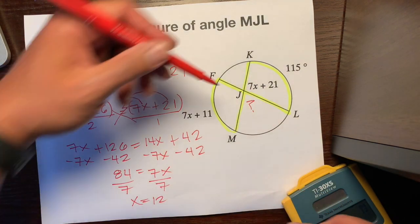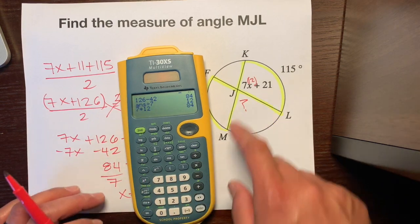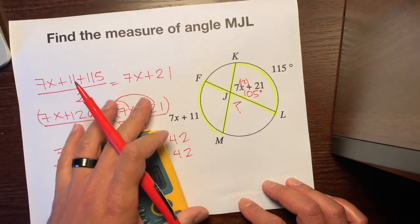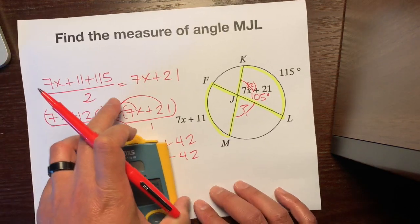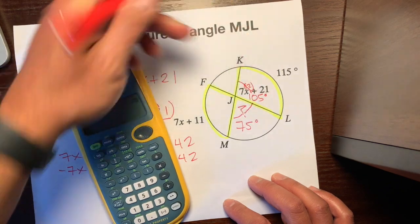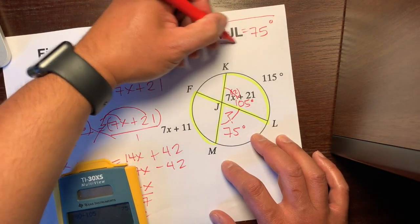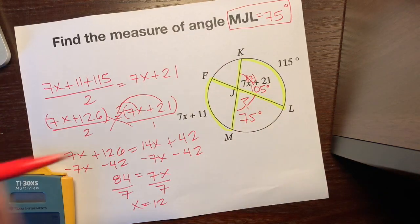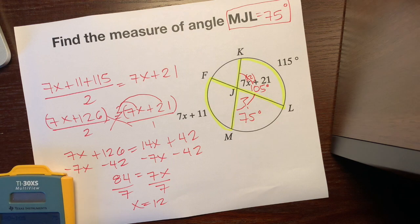We plug x into the angle expression: 7 times 12 plus 21 is 105 degrees. That means this angle is 105 degrees. We're trying to find angle MJL, which is supplementary to that 105. So 180 minus 105 is 75 degrees — angle MJL is equal to 75 degrees. And this is what you do when you have two chords that intersect somewhere in the circle but not in the center: find the average of the two intercepted arcs and set it equal to the angle. Hope it helps. Have a great day.